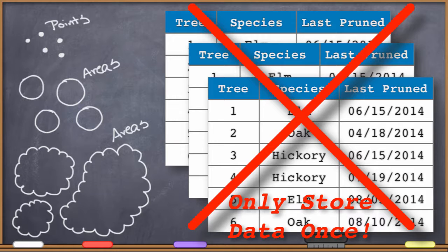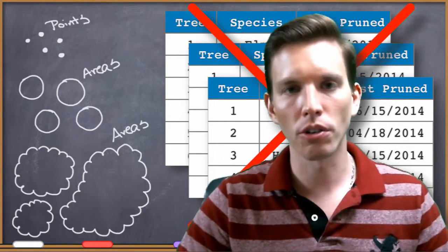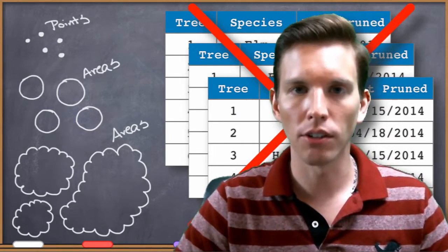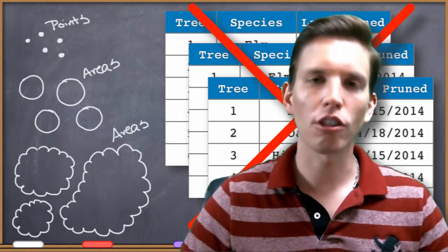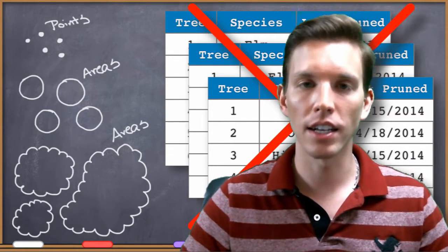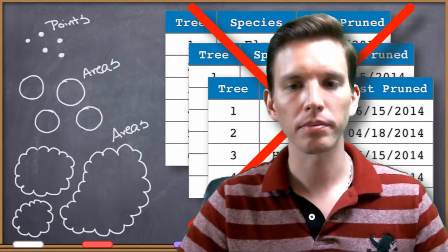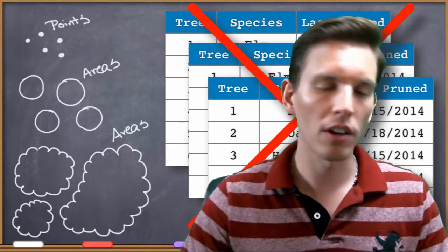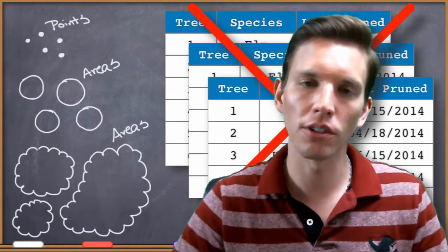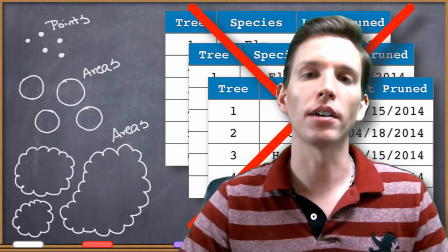If you put that attribute column about pruning into more than one of these data files, then you're violating that rule — you're storing the information in triplicate. And what happens when the tree is pruned again and that data needs to be updated? If you've got it in three places, you have to update that information in three different places. If the landscaping department comes in and says they just pruned the particular tree on the corner of the quad, I need to enter today's date into my data set. But if I'm storing that pruning information in three different files, I've got three different places I've got to go and update. That's not efficient — it's not the way that you want to run data management.